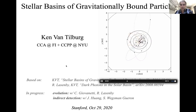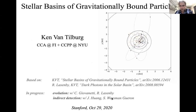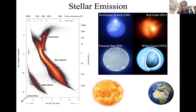Also with Robert and first-year NYU graduate student Cara Giovanetti, we're trying to answer one of the main unanswered questions from the first two papers: how this solar basin evolves in time — that has an order of magnitude uncertainty. And with Jun-Wei Huang and NYU graduate student Shalma Wexman, we're starting data analyses to do indirect detection of this particle population.